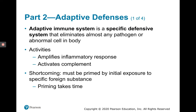Activities of the adaptive immune system include the amplification of the inflammatory response and the activation of complement. But there is a shortcoming to the adaptive immune system — yes, it's specific, but it must be primed. It must be primed by initial exposure before it can respond to a specific foreign substance, and the generation of effector cells like plasma cells, cytotoxic T cells, or helper T cells takes time.